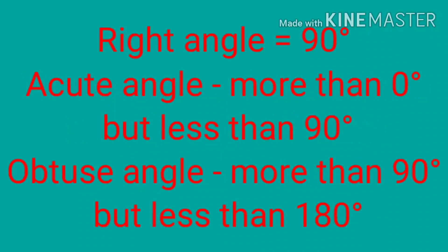Before starting, I want to revise the three angle types. A right angle measures exactly 90 degrees. An acute angle measures more than zero degrees but less than 90 degrees. An obtuse angle measures more than 90 degrees but less than 180 degrees.